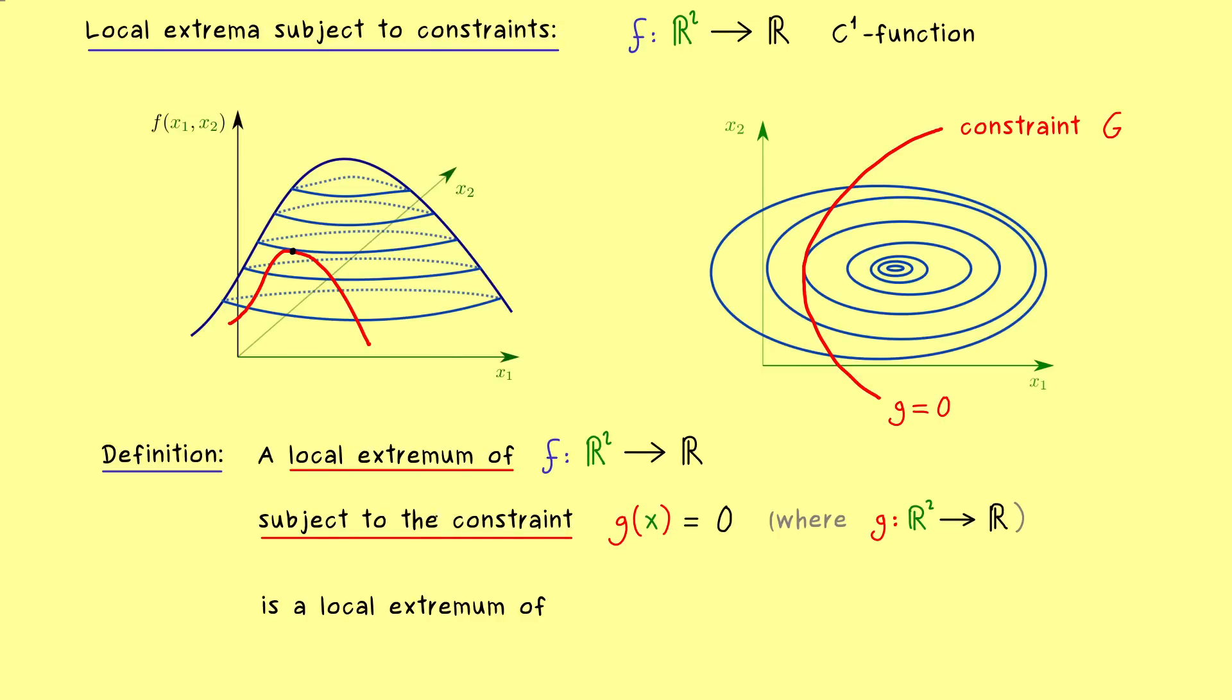Okay, and now this new name for a local extremum with constraints just means that we search for an ordinary local extremum of a new function. In fact, it's just a function f restricted to capital G. And please note, here in general, G is not an open set anymore. Indeed, we already know that G is just the contour line from above. So all points x in R² that satisfy that g of x is equal to 0. So there we have our new domain and there we want to find the local extrema.